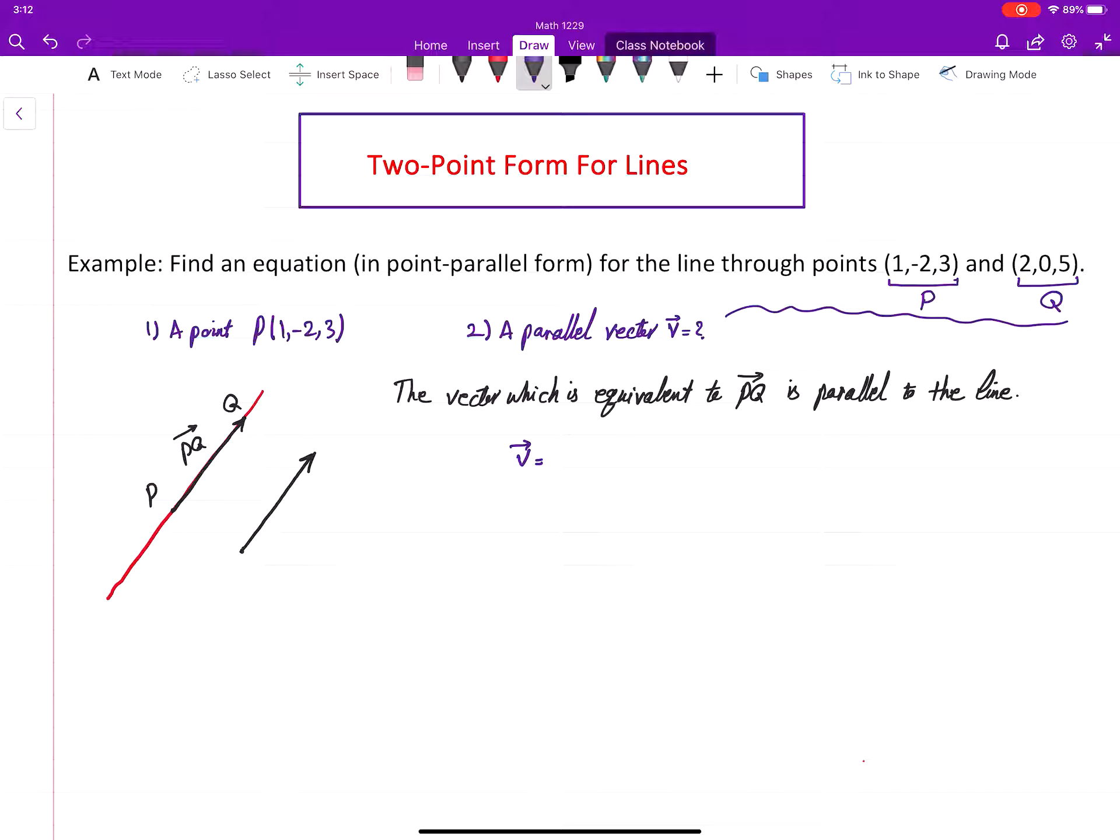We can set B to be that equivalent vector, which is the endpoint minus the starting point. In this case, it is (2, 0, 5) minus (1, -2, 3), and this gives us: 2 minus 1 is 1, 0 minus negative 2 is 2, and 5 minus 3 is 2.